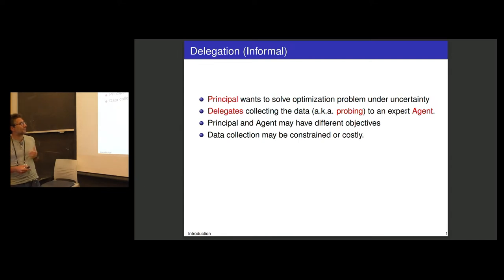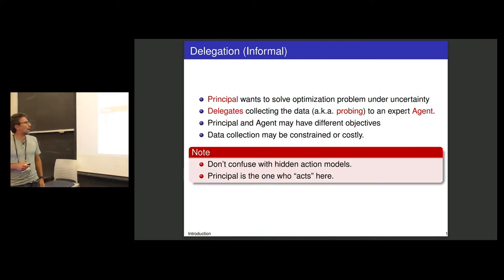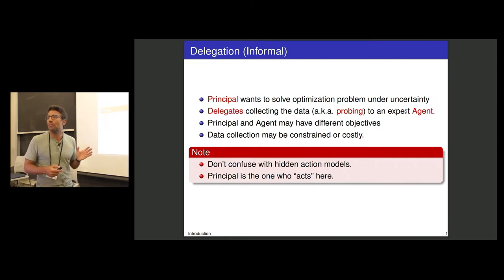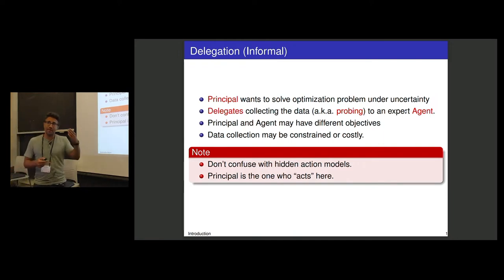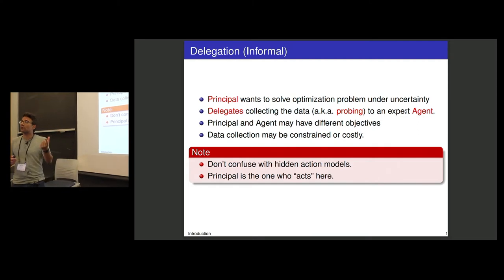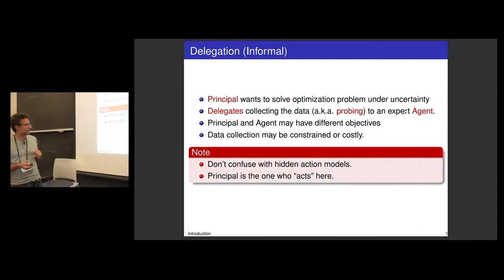Another difficulty is that collecting data may be costly or constrained. This is importantly different from hidden action models from contract design. One important difference is that the principal is the one who acts here — he selects the solution. The agent just explores the data and suggests a solution or provides information. There are other differences I'll emphasize later.